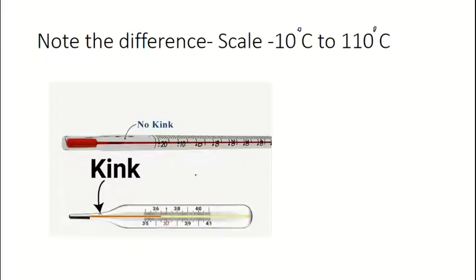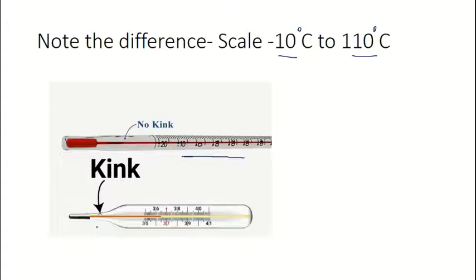Now let us understand the difference between the clinical thermometer and the laboratory thermometer. The purpose of a laboratory thermometer is to measure higher temperatures, so it is graduated from minus 10 degrees Celsius to 110 degrees Celsius, and that is why it has a longer stem. The laboratory thermometer has a longer glass tube compared to the clinical thermometer, and there is no kink in a laboratory thermometer.